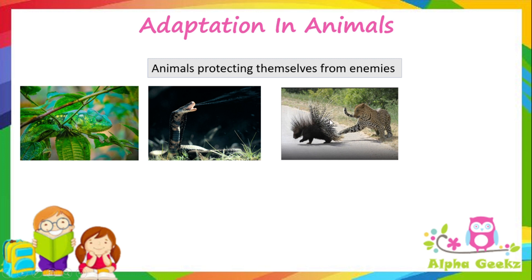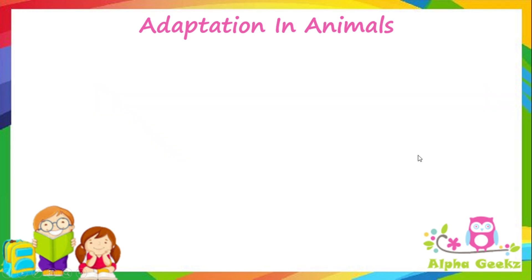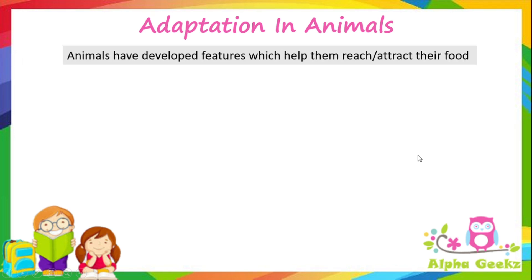Next we have the porcupine, which shoots quills at its enemy to injure it and escape. The deer has developed strong legs and runs at a speed of 90 kilometers per hour so that it can run as fast as possible to escape when in danger. Animals have also developed features which help them reach or attract their food.